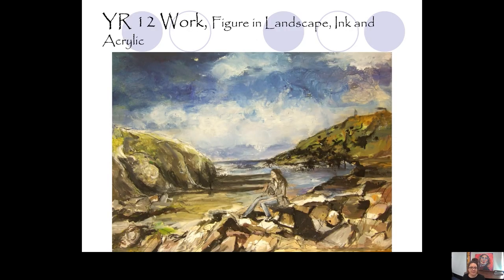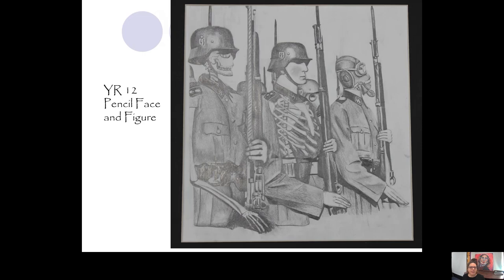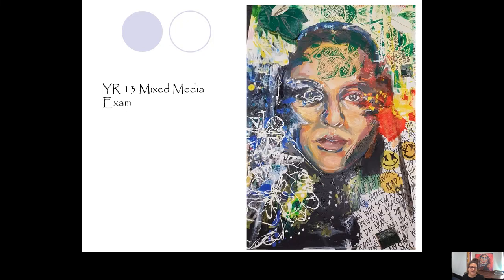Now I'd like to run through a few examples of students' work to show you the range. This is quite a large-scale figure-in-landscape piece. This one is quite tiny — it's all done in biro of the sea with really amazing attention to detail. This one is a pencil drawing, also quite tiny, again showing great attention to detail. This larger piece is mixed media where the student built layers upon layers — starting with acrylic, then lino prints, collage, free drawing with paint over the top, and text.